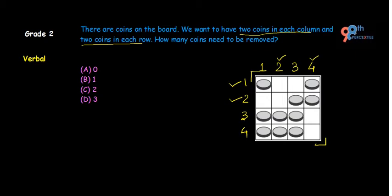Now let us mark the rows and columns from which we need to remove 1 coin. So we draw a line here. Let us start with this intersection and remove the 1 coin which lies at this intersection — the point where these 2 lines are cutting each other.